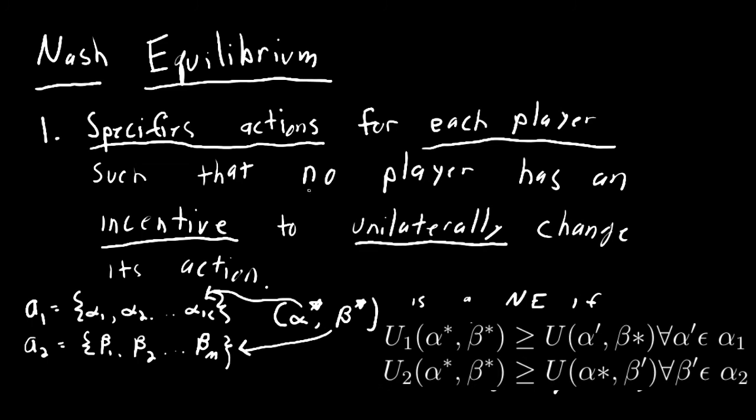The same condition can be written for player two. It says that player two's utility when player one plays α* and player two plays β* must be greater than or equal to player two's utility when player one still plays α* and player two plays β' for all β' in A₂. So this says α* and β* is a Nash Equilibrium if player one's utility when they're both playing this profile has to be greater than player one's utility holding player two's action at β*—notice this didn't change—but has to be greater than his utility for playing any other action α' that he can possibly play, for any α' in A₁. The exact same condition holds for player two. If these conditions hold for both players, then we say that α*, β* is a Nash Equilibrium strategy profile.